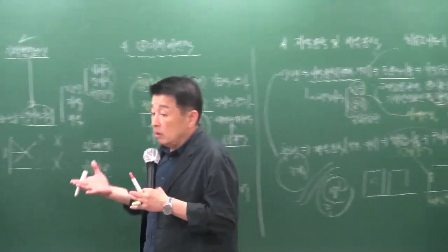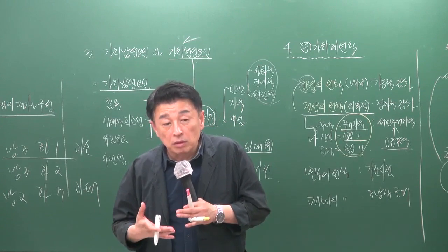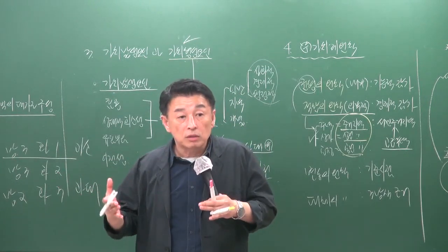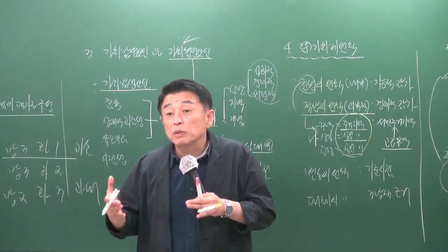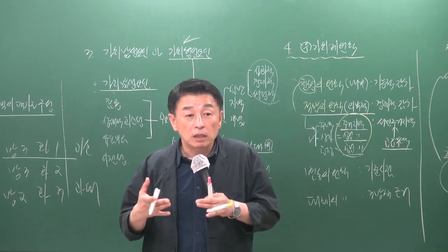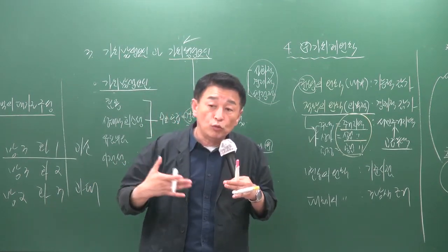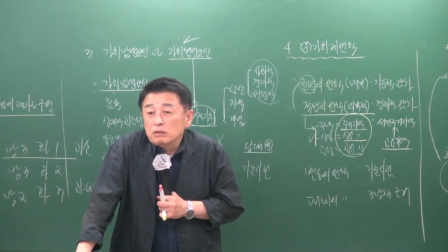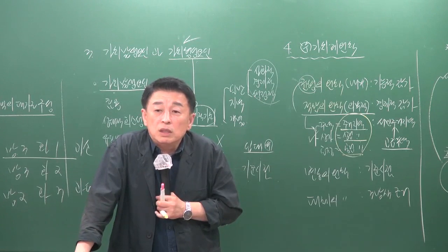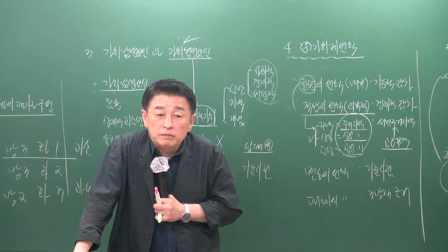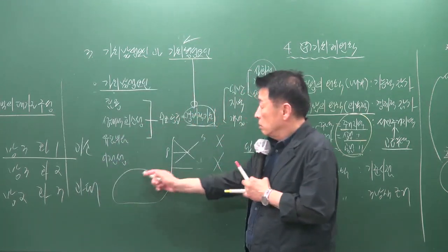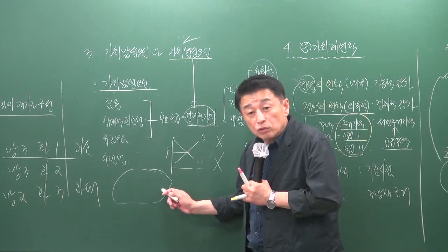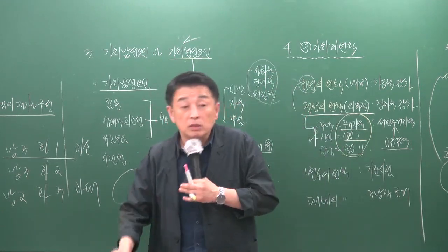인근 지역의 경계가 명백하지 않을 때는 그 지역의 표준적인 이용을 기준으로 경계를 구분합니다. 중요한 것은 같은 동에 소재한다고 해서 인근 지역으로 보아서는 안 된다는 점입니다. 하나의 동 안에도 주택, 상가, 공장, 농지 등 다양한 용도가 혼재할 수 있으므로 인근 지역의 범위는 상대적으로 좁게 봐야 합니다.